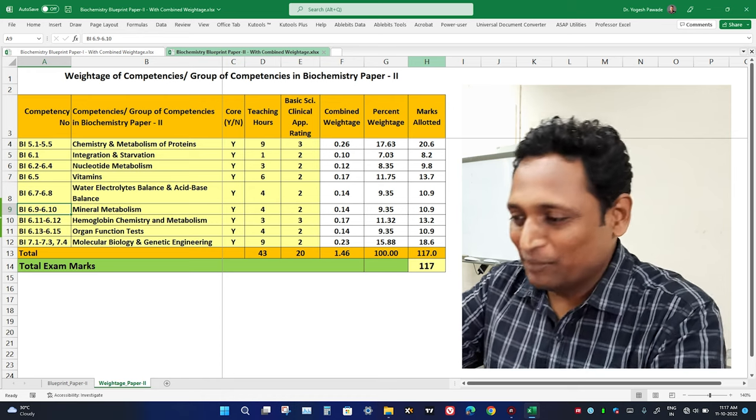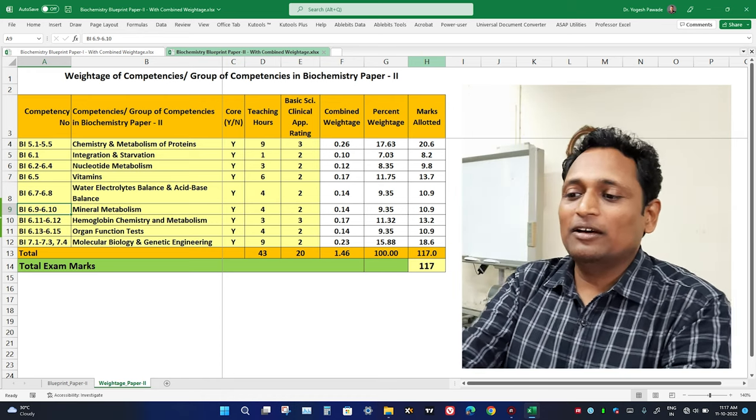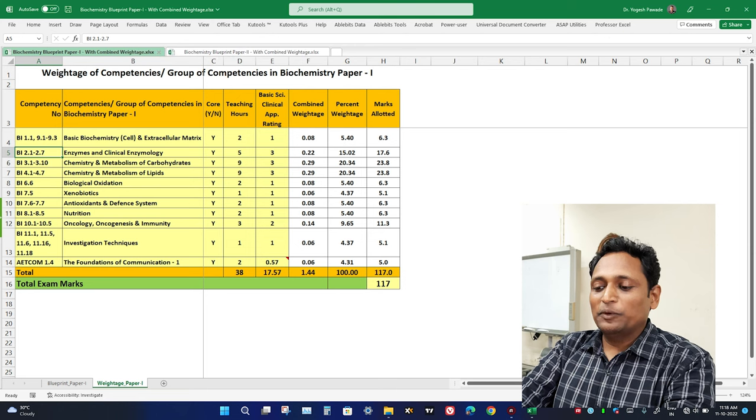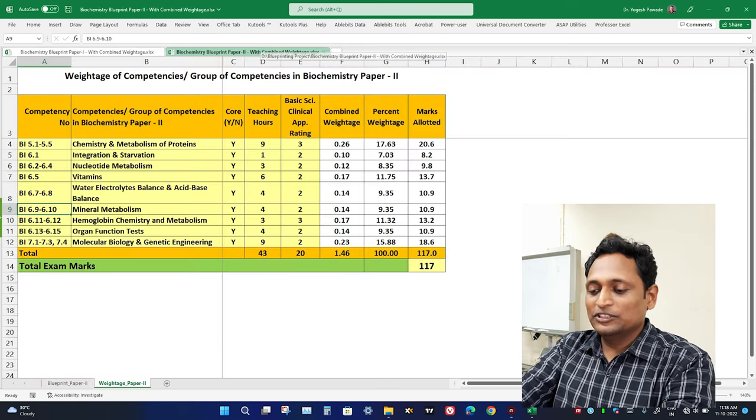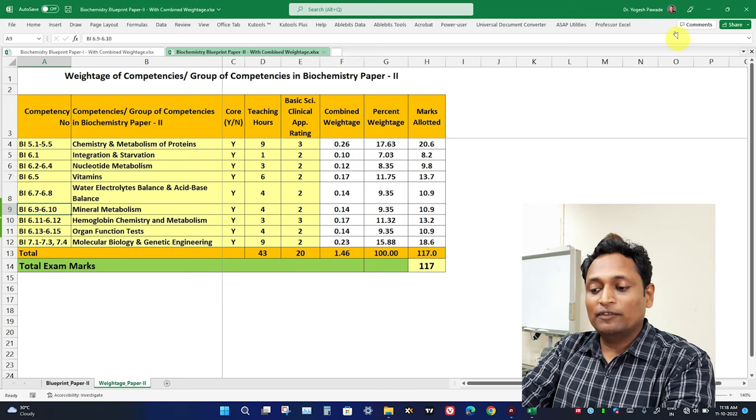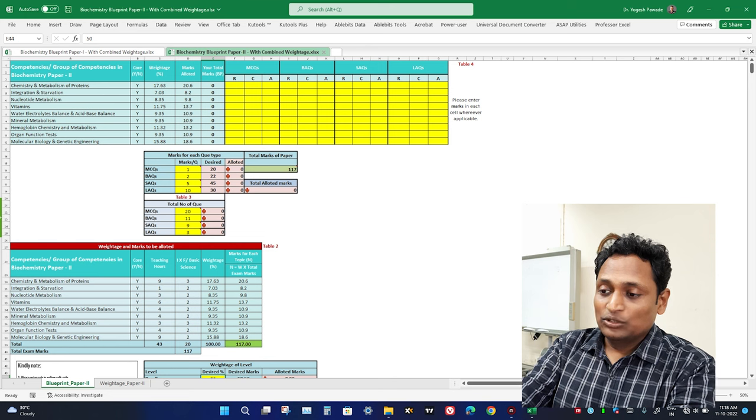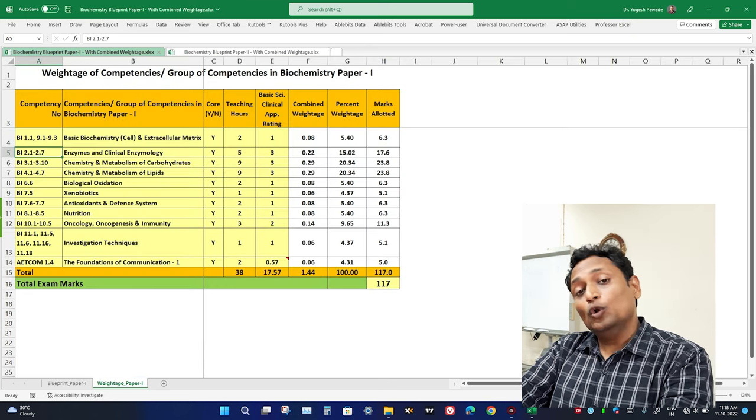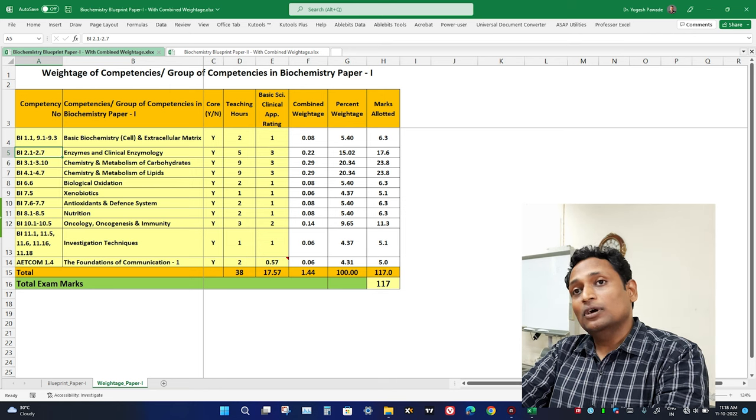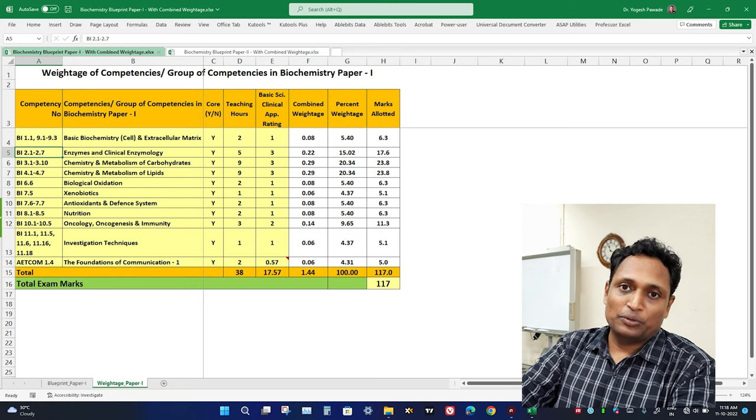Let's discuss Excel sheet templates. If you have opened both the Excel sheets there are 2 spreadsheets here: Weightage Paper 1, Blueprint Paper 1. And here there is one Weightage Paper 2 and Blueprint Paper 2 in both the Excel sheets. In Paper 1 you will see that the groups of competencies as per MWG's distribution is already given for Paper 1 and Paper 2.